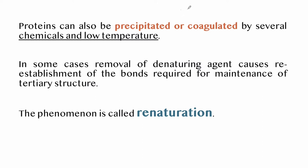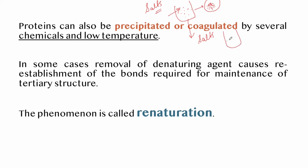Proteins can easily be precipitated or coagulated by several chemicals and low temperature, causing them to clump together. In some cases, removal of the denaturing agent — for example, certain salts — causes the reestablishment of bonds required for the maintenance of the tertiary structure. The tertiary structure is then reestablished, and this phenomenon is known as renaturation.